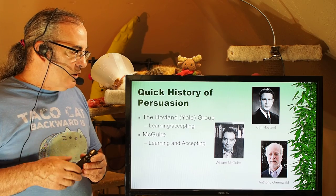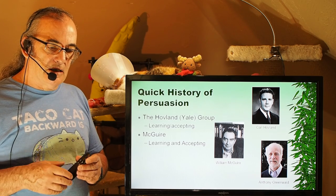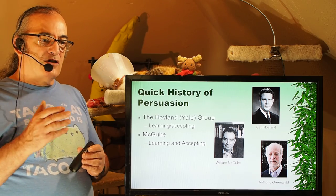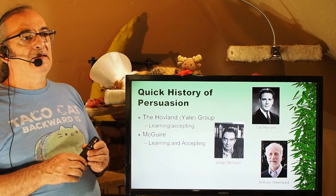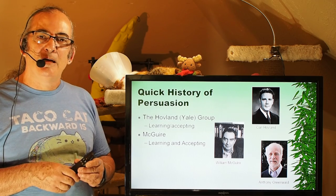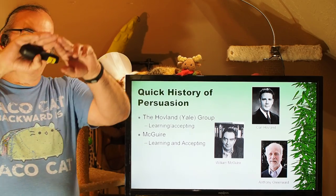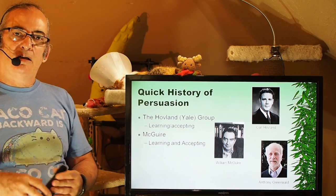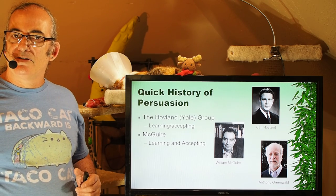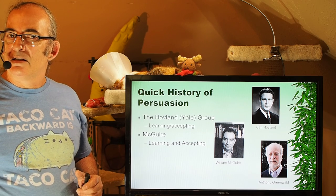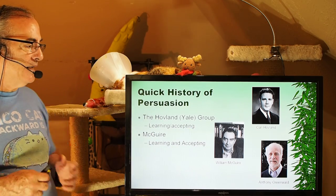Bill McGuire questioned this idea severely. He said learning and accepting go together, but some people aren't really capable of learning easily, so they might not accept the message. And highly intelligent people are hard to persuade too, because they voice counter-arguments and pick apart the persuasive message. Looking at a bell-shaped curve of intelligence, people in the middle do well with the learning-and-accepting theory, but those at the high end learn yet counter the message, and those at the low end might not learn it at all.